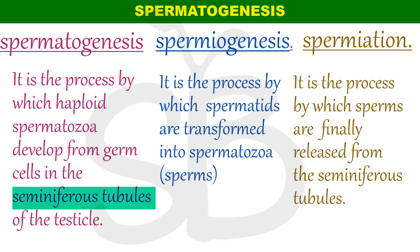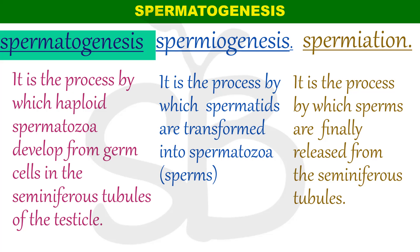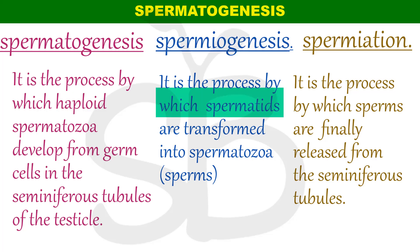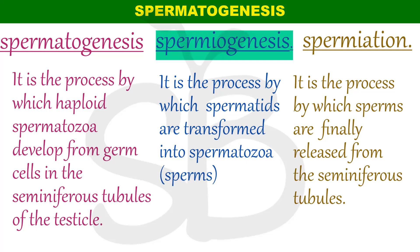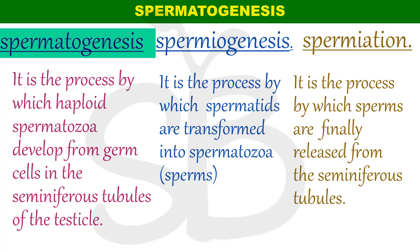In the testicles, in the seminiferous tubules, the spermatozoa and sperm cells form through the entire process — this is called Spermatogenesis. The next term is Spermiogenesis — this refers to the transformation of spermatids into spermatozoa. The third term is Spermiation — the release of spermatozoa from the Sertoli cells into the seminiferous tubules.